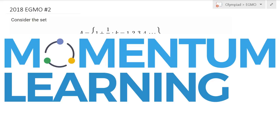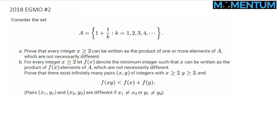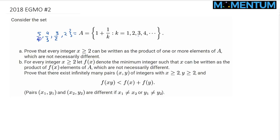This is the 2018 European Girls Math Olympiad, problem number 2. We are considering the set A — let me rewrite it. If you plug in k=2, you get 3/2; if you plug in 3, you get 4/3; and so on. It's a decreasing sequence that approaches 1 in the limit.